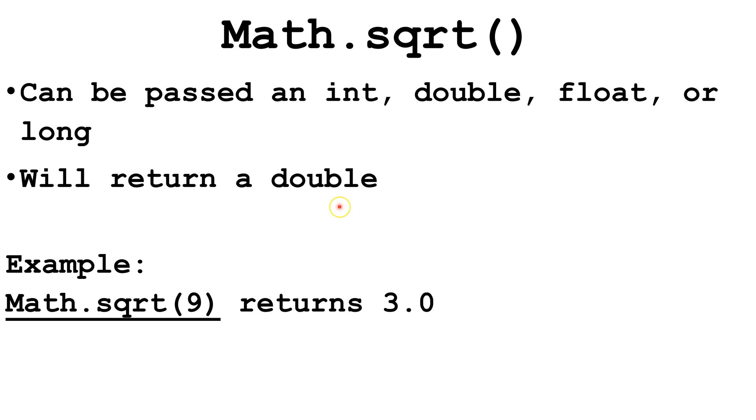No matter what data type you send it. Let's look at this example. Math.sqrt, and we're sending the argument int 9, and it will return 3.0, because 3 is the square root of 9.